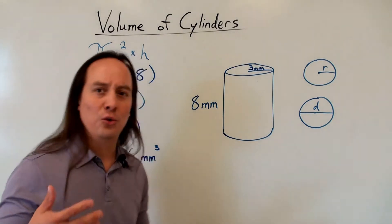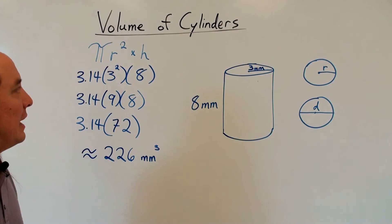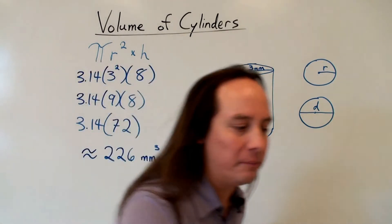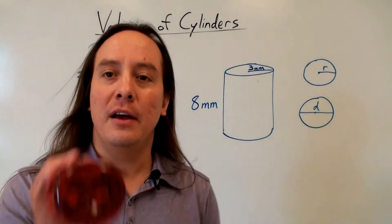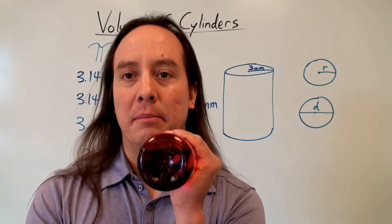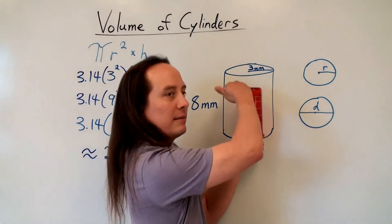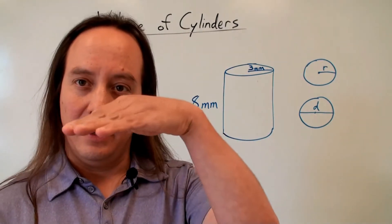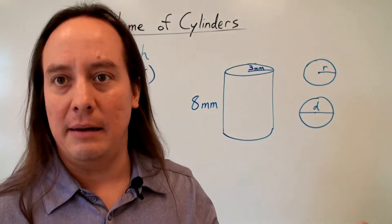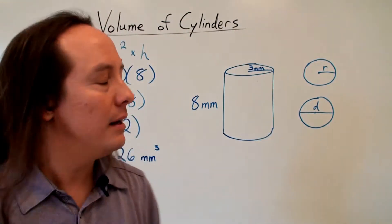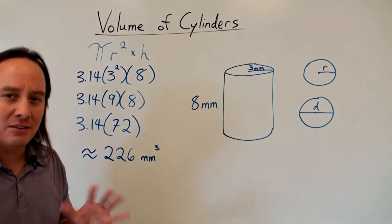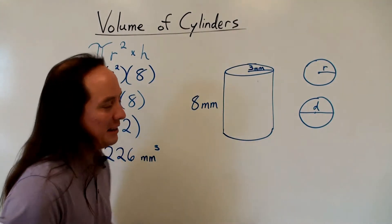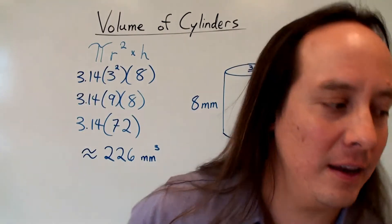What we did first was find the area of the bottom or top disc of the cylinder, then we just multiplied by 8 — the height. That's all there is to it. It's not too complicated, though problems do get more interesting and more fun. They do get more complicated.